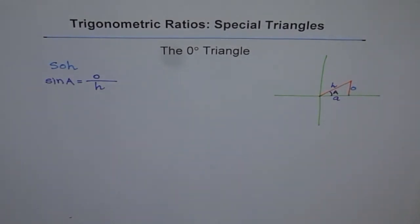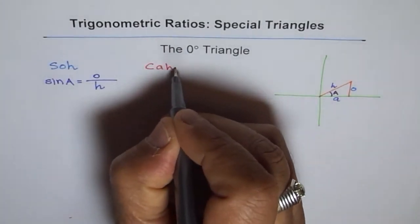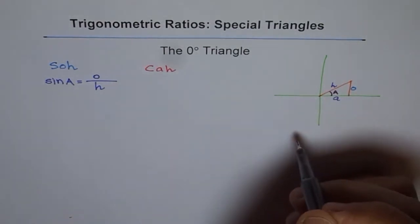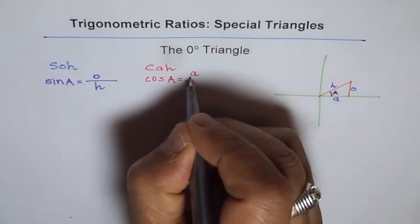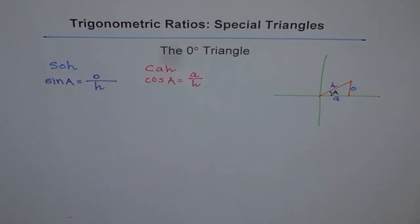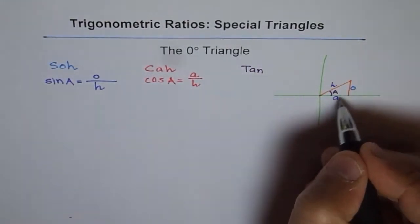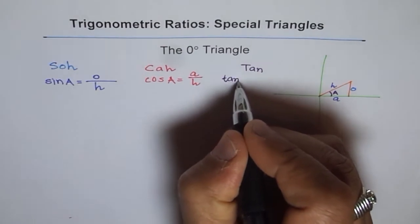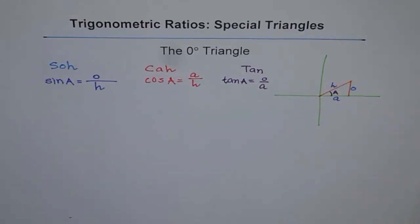Cosine is CAH: cos of angle A equals adjacent over hypotenuse — the ratio of adjacent side to hypotenuse. And tangent, TOA: tan is opposite over adjacent side. So these are the basic definitions of the primary trigonometric ratios — sine, cosine and tangent.